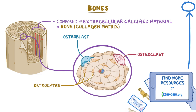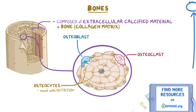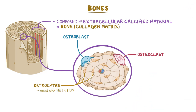Osteocytes are found in cavities, or lacunae, between the layers of the bone matrix and assist with the nutrition of the bone. Osteoblasts are found mostly along the surface of bones, but also within the bone matrix itself. They are responsible for both synthesizing and mediating the mineralization of the bone matrix.